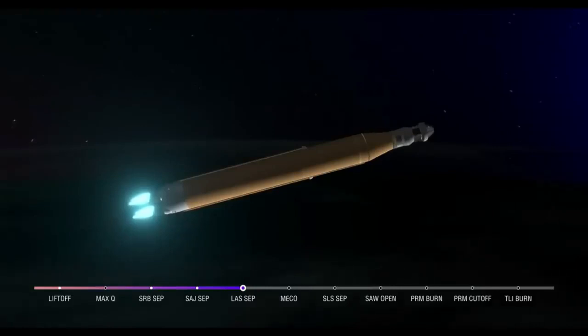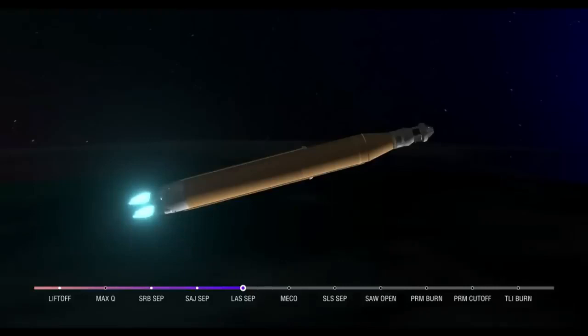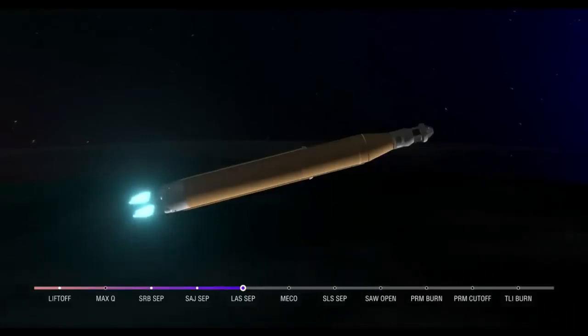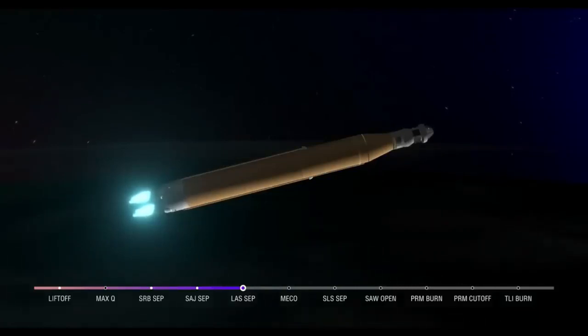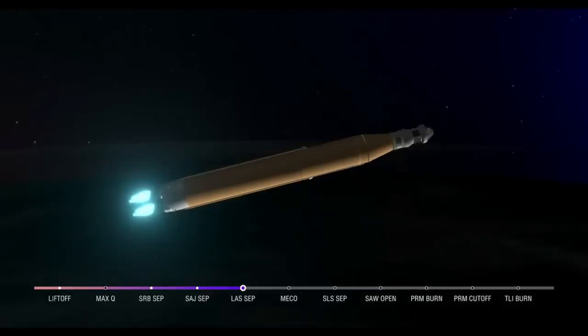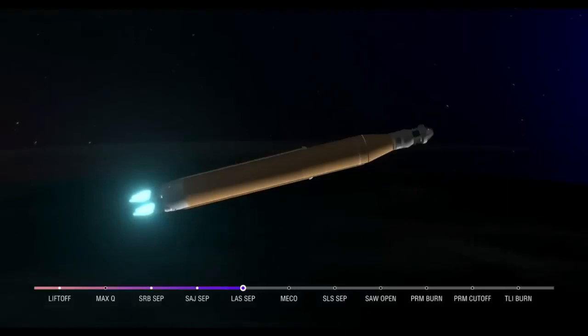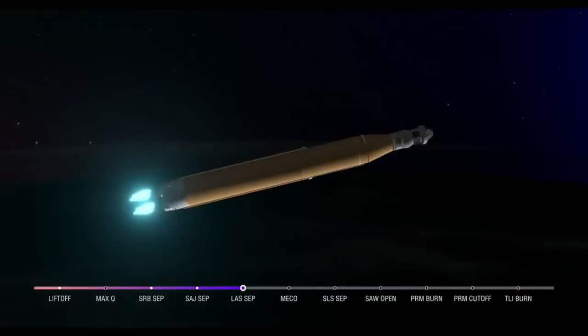Now traveling over 10,000 miles per hour, 6 minutes and 15 seconds into the flight of Artemis I, 427 miles downrange. Quiet here on the loops in Mission Control Houston, teams continue to monitor this first flight. About a minute and a half now until that core stage main engine cutoff time. Our four core stage engines continue to fire maximum thrust. Coming up on 7 minutes since launch today, now traveling over 12,800 miles per hour, 563 miles downrange. Again, still quiet here in Mission Control Houston.